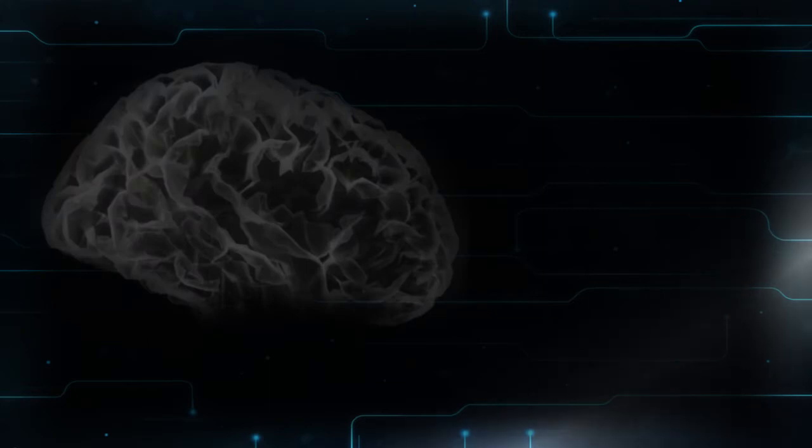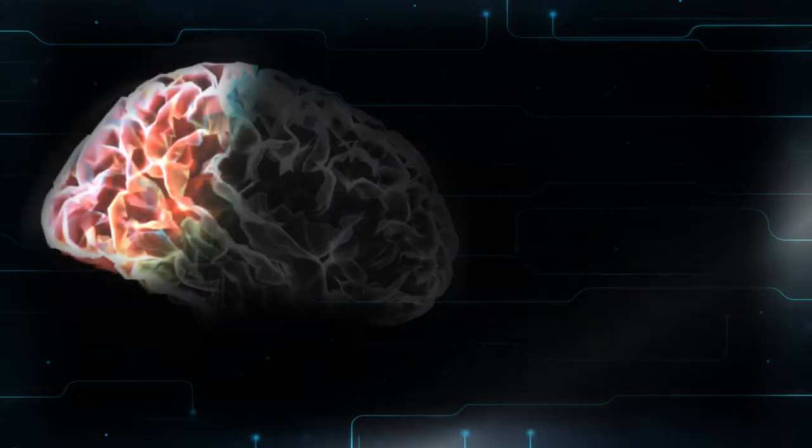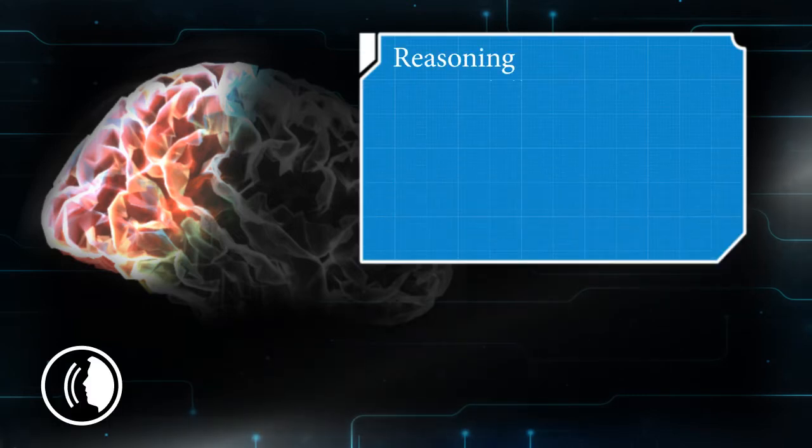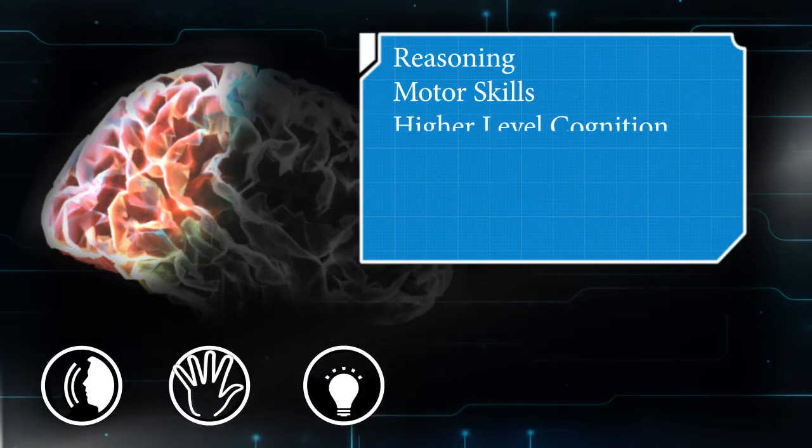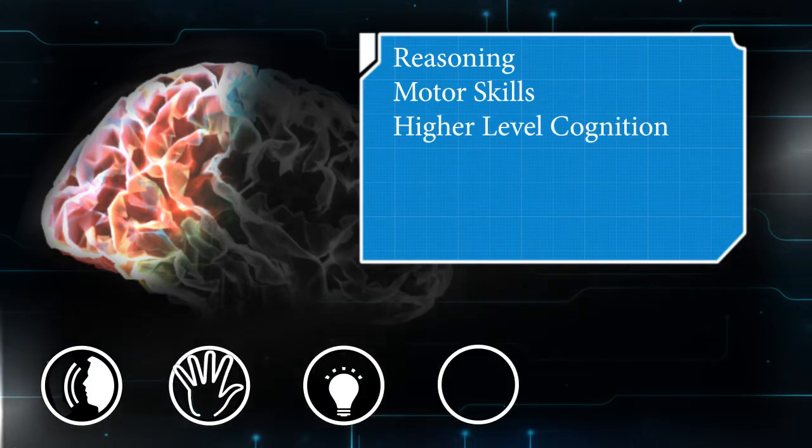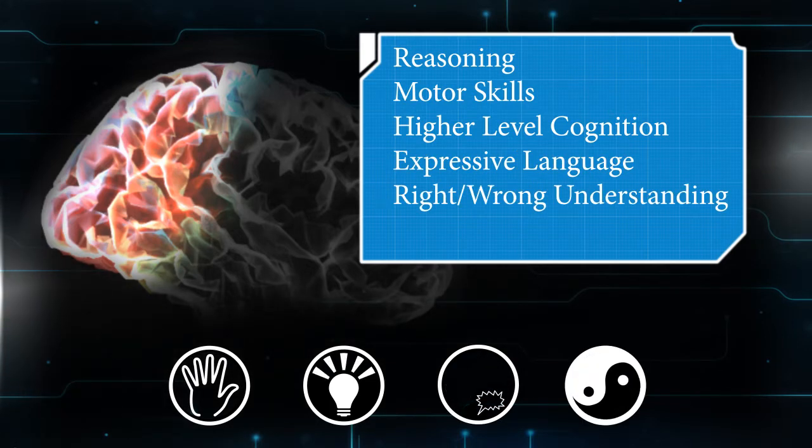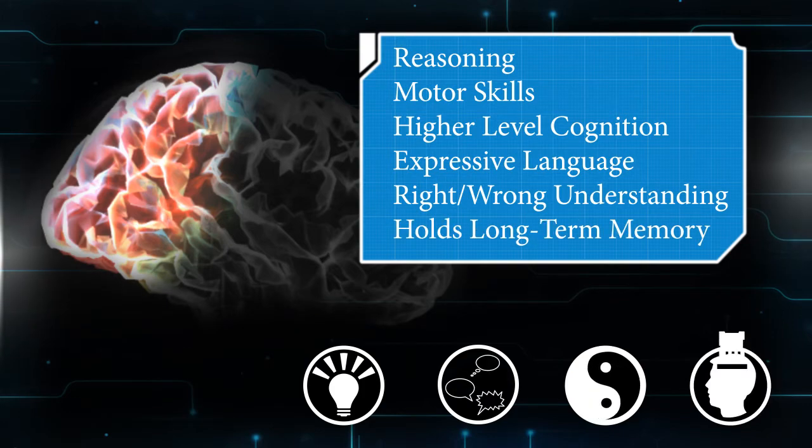Let's look at each lobe and their functions. The frontal lobe is located at the front of the brain. Here are its major roles: reasoning, motor skills, high-level cognition, expressive language, right and wrong understanding, and long-term memory.